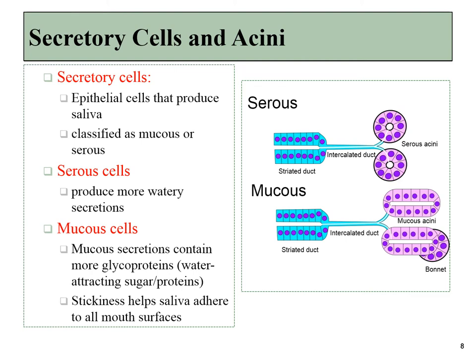The acini come in different shapes, and you could memorize those shapes and be able to identify them under the microscope. But in this course, because our school does not have microscopes in the dental hygiene department, that's not going to be my focus. My main focus is on the different types of saliva that are produced. Saliva can be a mixture of serous secretions, which are more watery, and more mucousy secretions, which are stickier. The main difference being in the amount of glycoproteins that those cells produce and secrete.